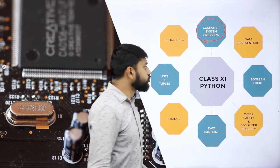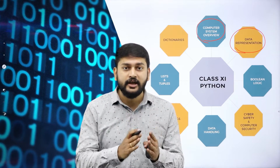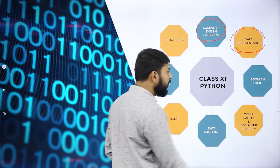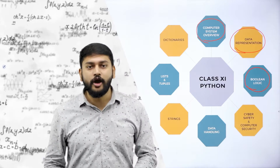The next important thing you will learn is data representation. Computers use a language called zeros and ones — what we call binary language. We use zeros and ones to represent data in different forms, and that is what we call data representation. After that, you will learn Boolean logic — a lot of laws and theorems in Boolean logic.